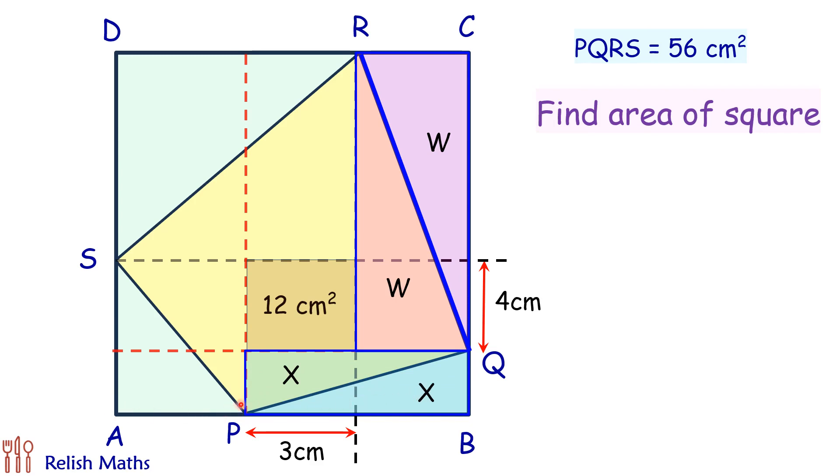Now here if you look at this rectangle, SP is your diagonal, so if this area is y then this area will also be y. And this rectangle on top, here SR is your diagonal, so if area is z then this area will also be z.